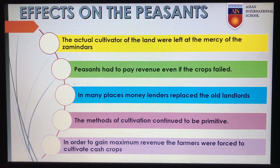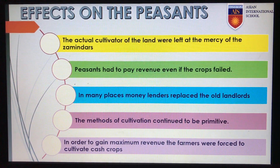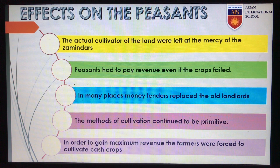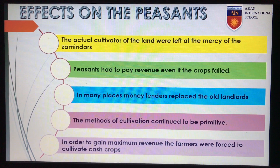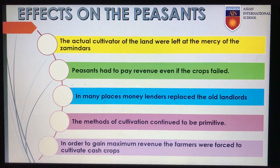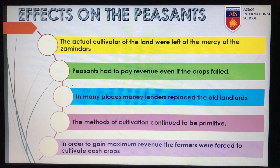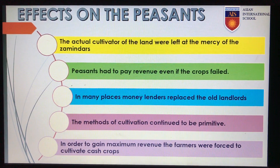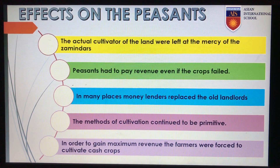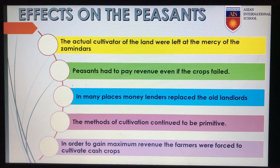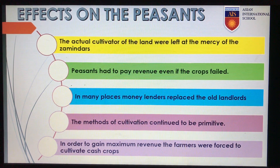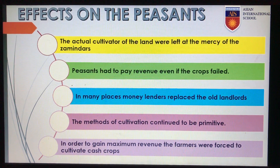But the Permanent Settlement affected the peasants very badly. The actual cultivators of the land were left at the mercy of the zamindars, who would often extract an exorbitant rate from them. The peasants had to pay revenue even if the crops failed, and most of the time they were forced to borrow money from moneylenders at a very high interest rate. If they were unable to repay their loans, their lands were mortgaged off and they had to look for alternative employment or migrate to urban areas. At many places, moneylenders replaced the old landlords, who took no interest in improving agricultural production.